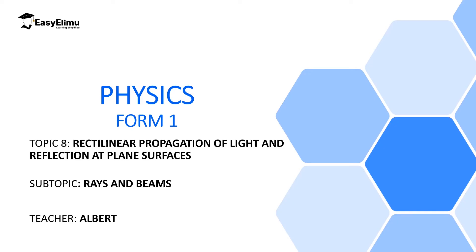We also focused on the light which is traveling in a straight line must be coming from a certain source. Then we talked about the two sources of light: luminous sources, which produce their own light, and non-luminous sources, which reflect light from luminous sources.